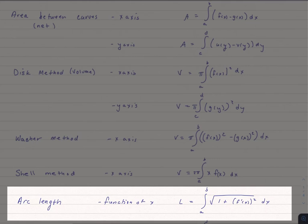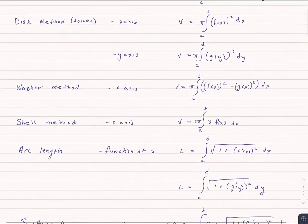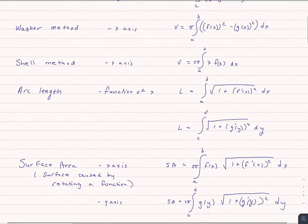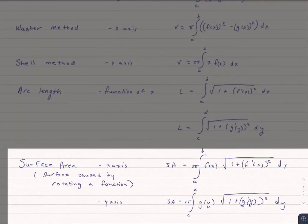Well now the last step is to take this arc length and spin it around an axis, and that's going to give us surface area. So the surface area is when we're taking that arc length and spinning again around either the x-axis or the y-axis.